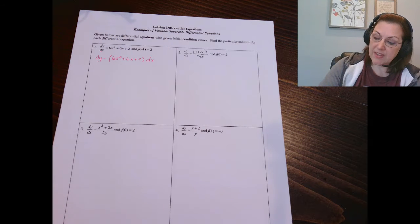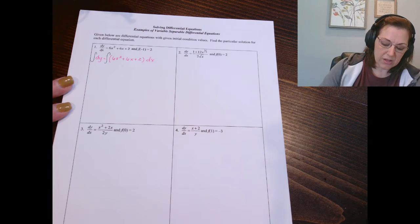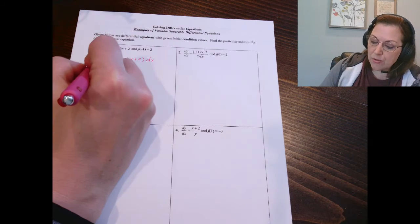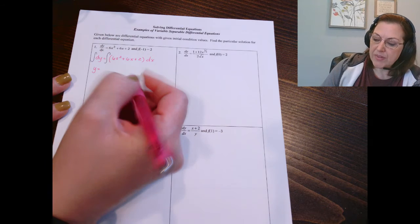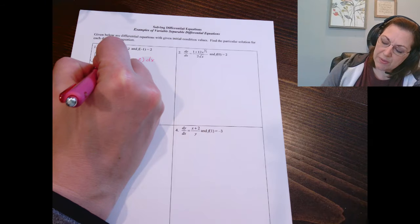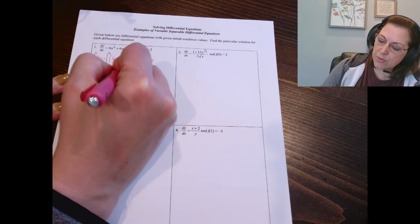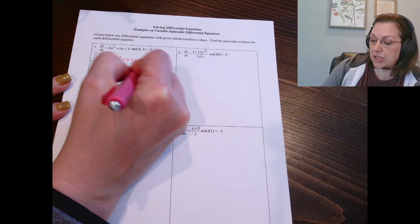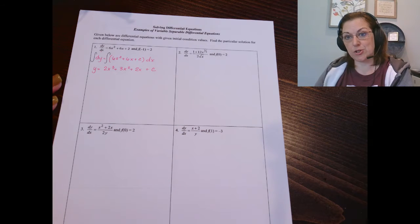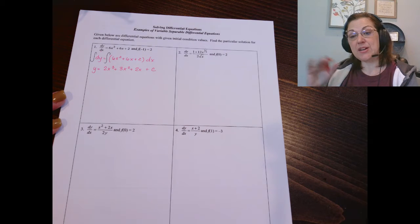We do this because then we want to integrate both sides. So our next step is to integrate both sides. The left side is pretty simple — the integral of dy is just y — and then you can integrate the right side term by term. So that would be 2x cubed plus 3x squared plus 2x. And then the general solution includes a constant of integration. Now we've found the general solution.